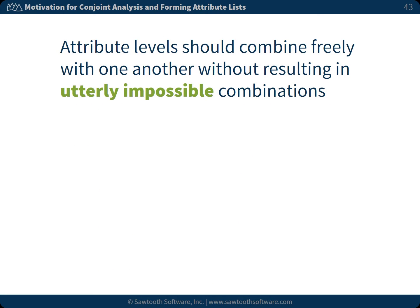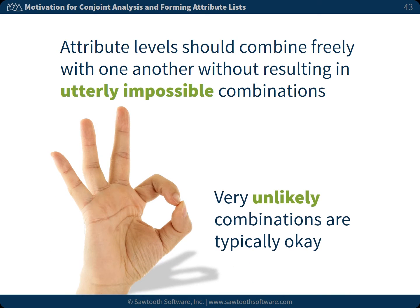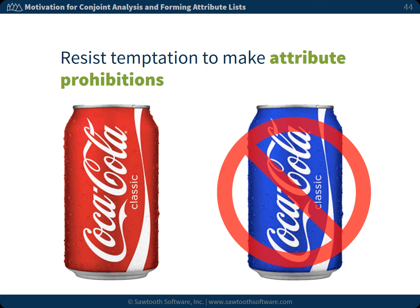Another suggestion is to make sure levels from your attributes can combine freely with one another without resulting in utterly impossible combinations. Very unlikely combinations are typically okay. Resist the temptation to make attribute prohibitions. Attribute prohibitions occur when you prohibit levels from one attribute from occurring with levels from other attributes. Sometimes a product is shown with all the best features at the lowest price, or two attribute levels that would not naturally occur in the real world are paired together — the inclination is simply to prohibit such combinations. But by avoiding prohibitions, we usually improve the estimates of the combinations we actually focus on. For advanced analysts, some carefully chosen prohibitions are okay and may even be helpful.